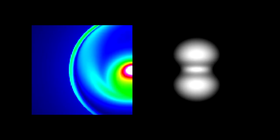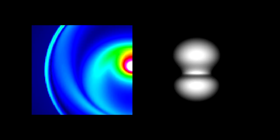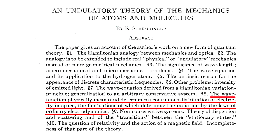We end up with a picture that looks very much like a little antenna with oscillating electric charge, which, according to classical electromagnetic theory, would emit a light wave at the oscillation frequency. This is why Schrödinger was led to conclude, The wave function physically means and determines a continuous distribution of electricity in space, the fluctuations of which determine the radiation by the laws of ordinary electrodynamics.